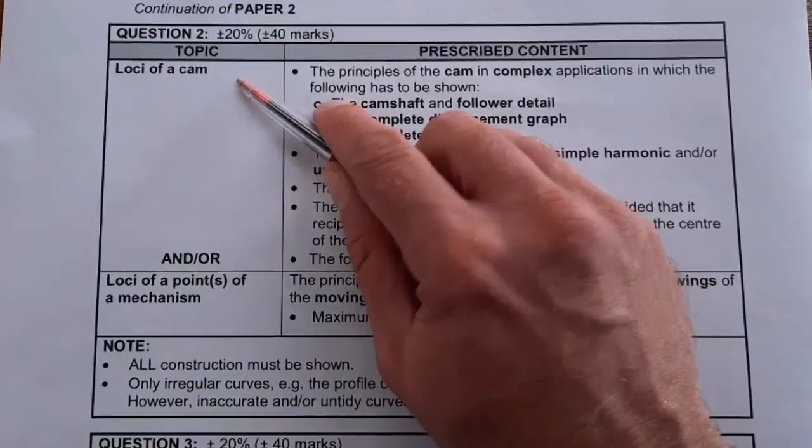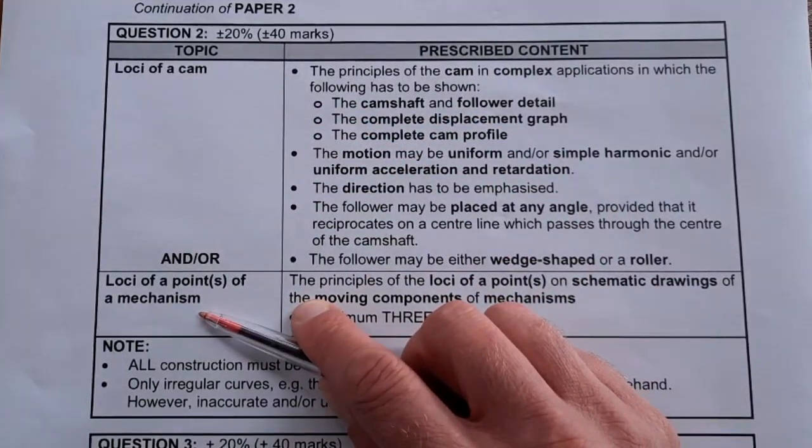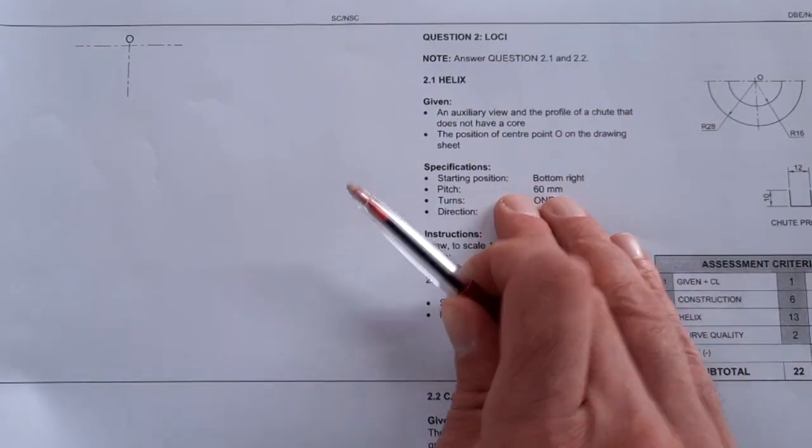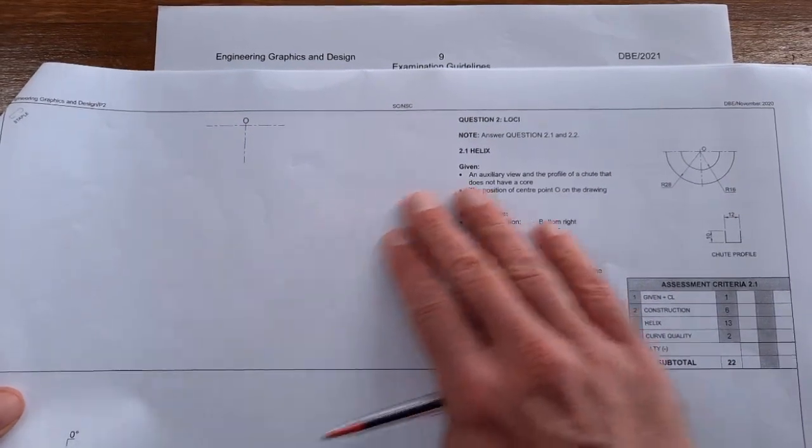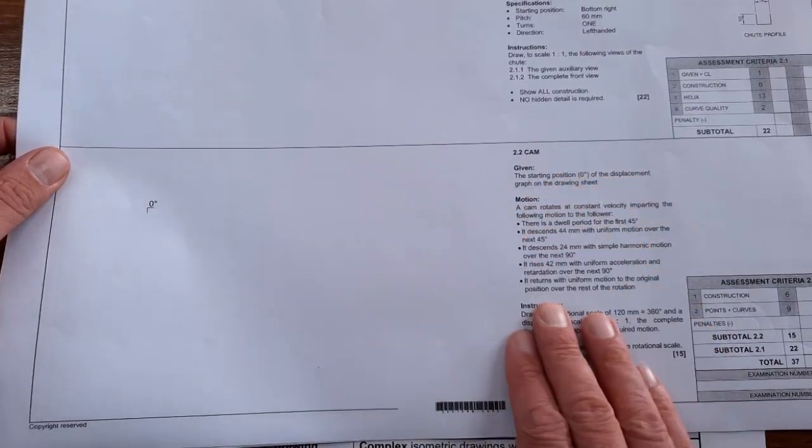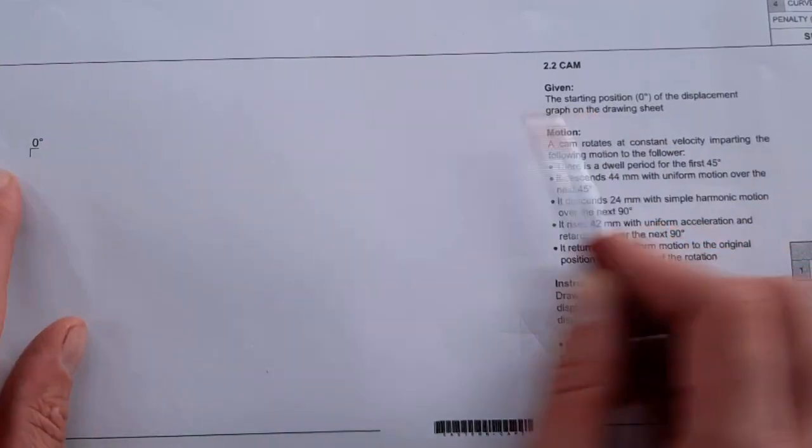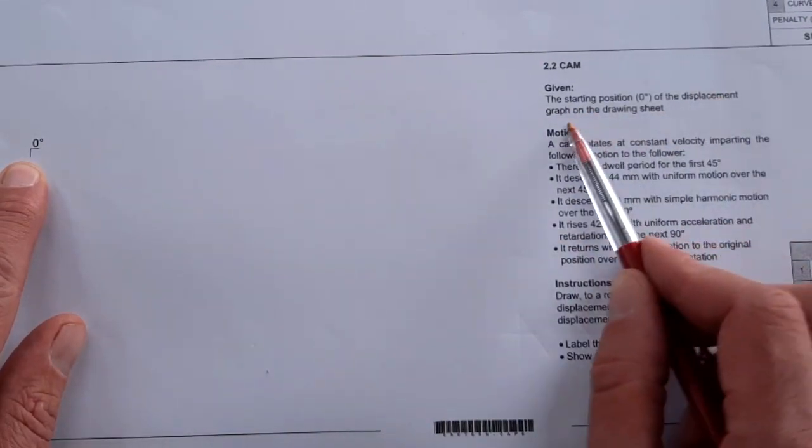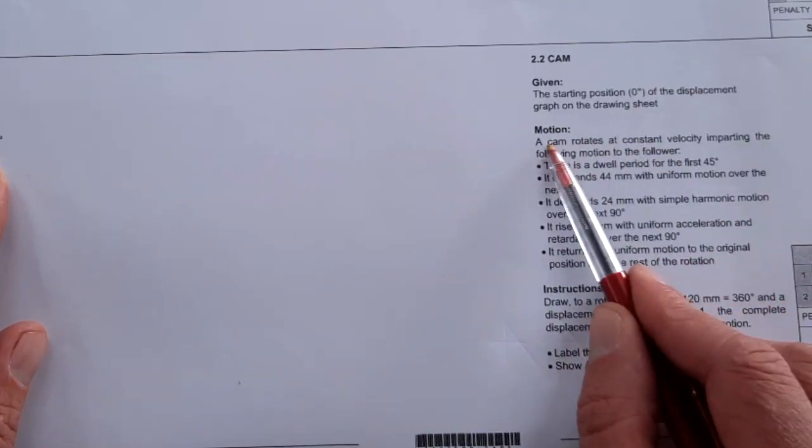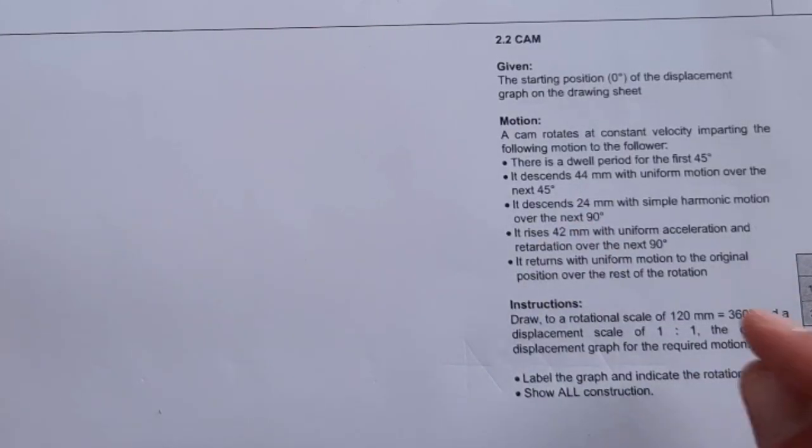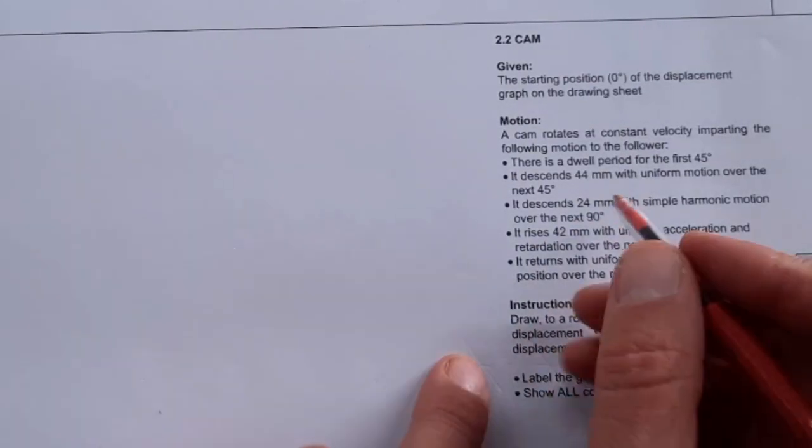That's your loci of a cam and loci of a mechanism. Please make sure, be sure they will not ask a loci of a helix. It's very clear, it's only a cam or a mechanism. Let's look at last year's paper. Last year they asked of course the helix and the cam. They will not ask helix this year. This might be replaced of course by a mechanism, but we're just going to look at the example that was required here, the cam. What you're going to do is you can take your time and read through what is given. The starting point, zero degrees of the displacement graph on the drawing sheet, and then the motion of the cam.